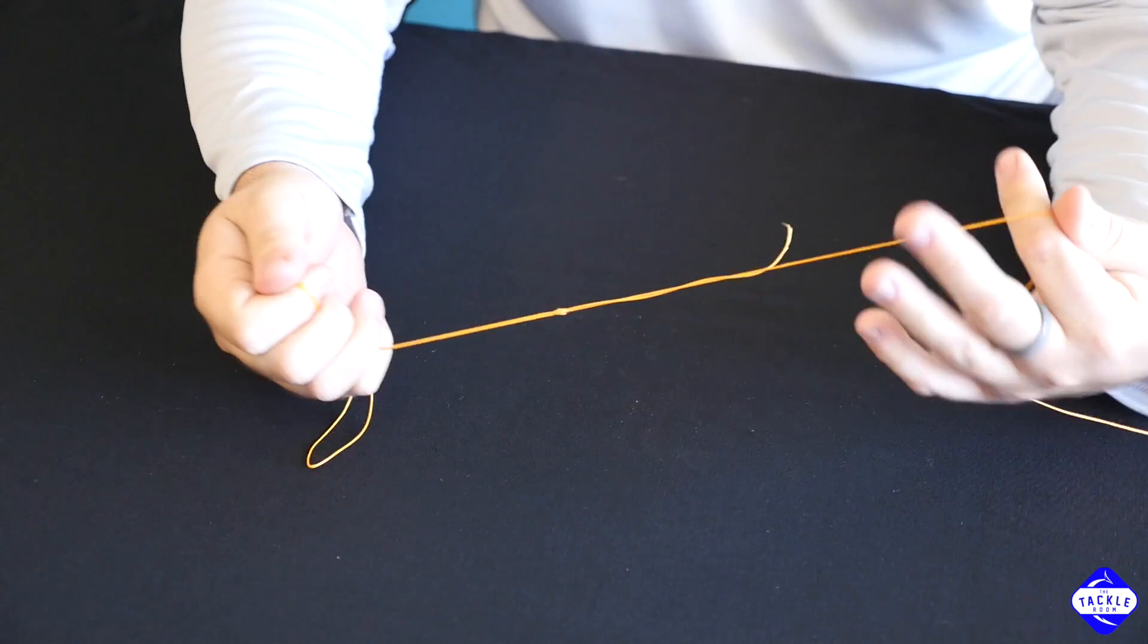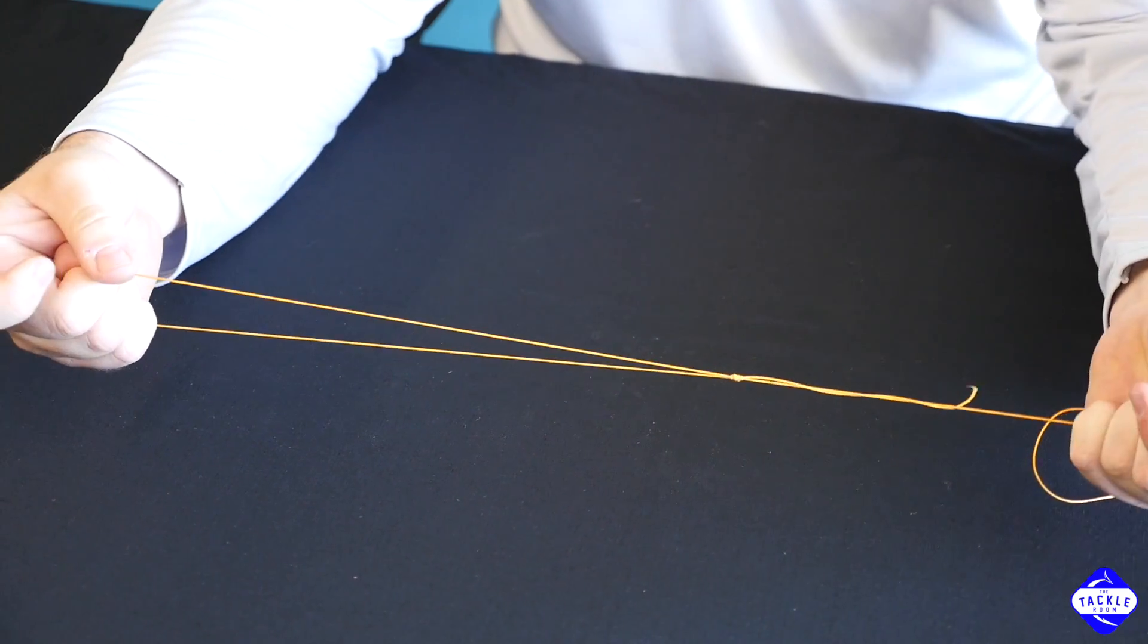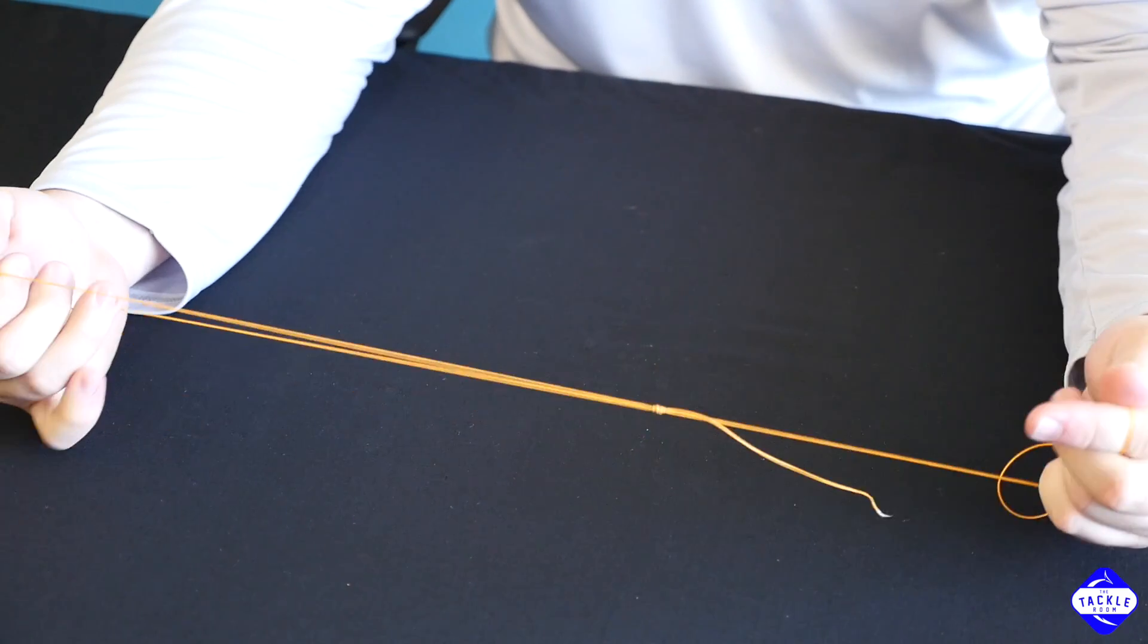Let your tag end go. Hold one piece here. Put your other hand in the loop and give that another pull just to cinch everything down as tight as you can get.